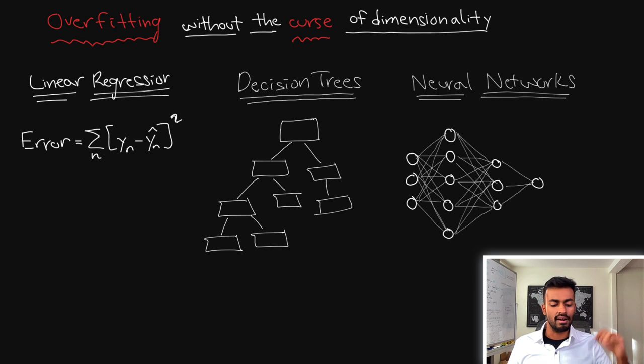On a final note, I wanted to touch on the fact that the curse of dimensionality can cause overfitting, but overfitting can also be caused without just the curse of dimensionality. Good examples where this happens are linear regression, decision trees, and neural networks. For all of these we typically mitigate this through some regularization techniques or dimensionality reduction techniques.